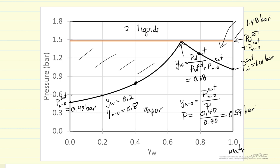Likewise, we can generate other points using the exact same reasoning. On the other side, the partial pressure of water is the saturation pressure. We generate these curves from the principle that if a liquid is present, it exerts its saturation pressure, and the partial pressure of the other component is less than its saturation pressure.